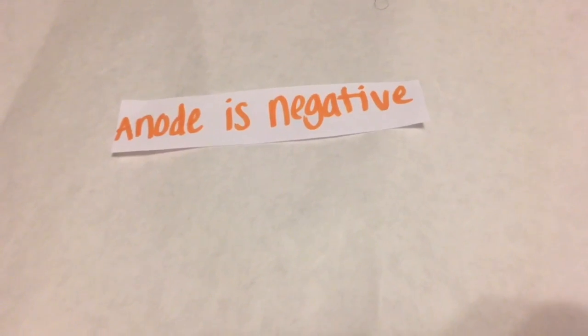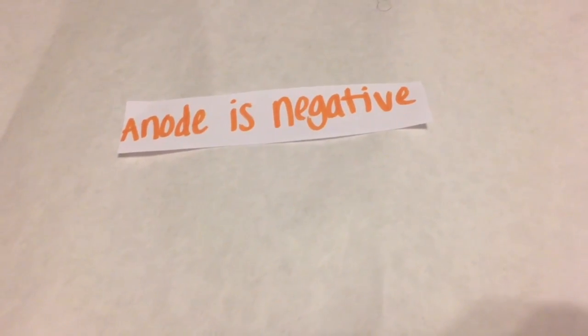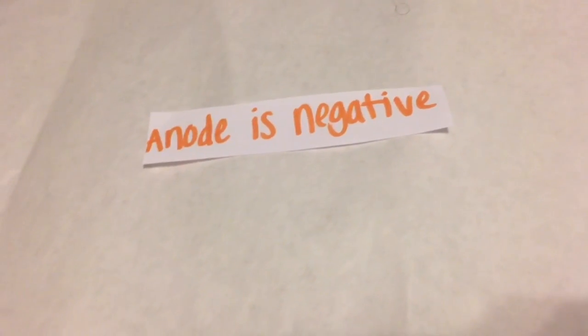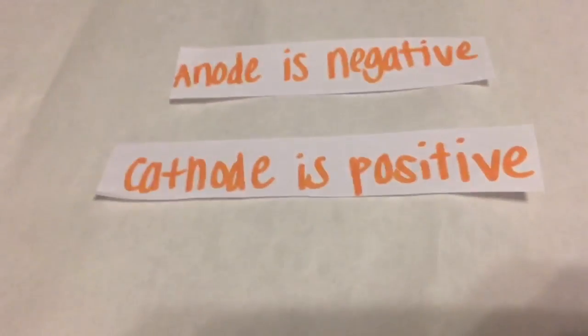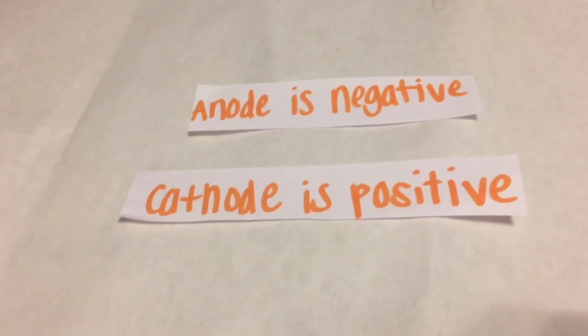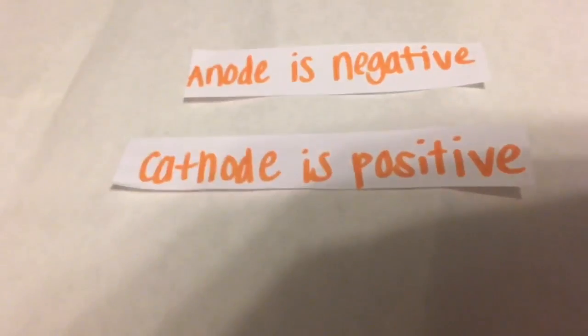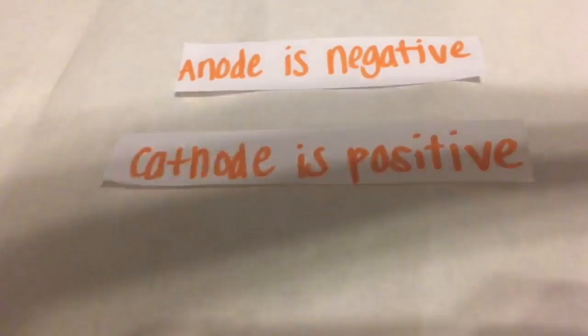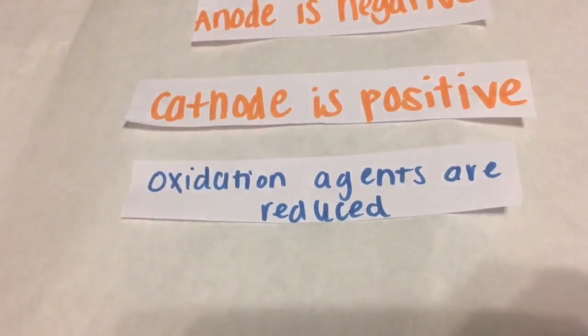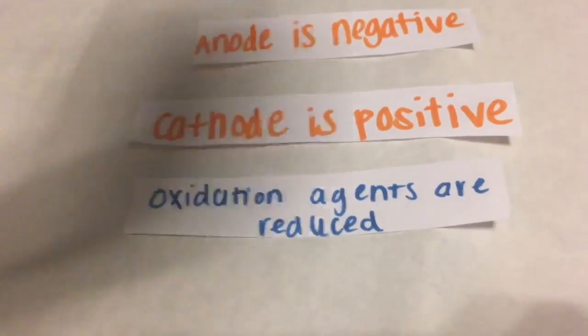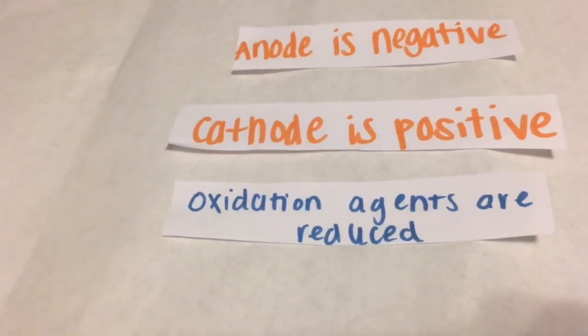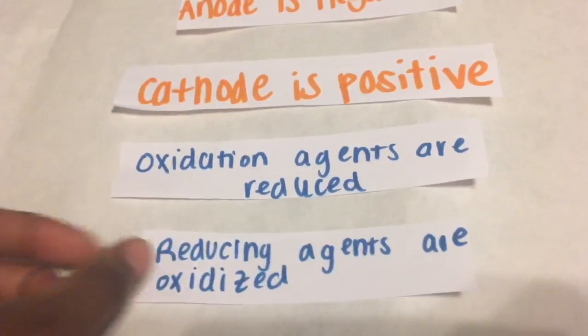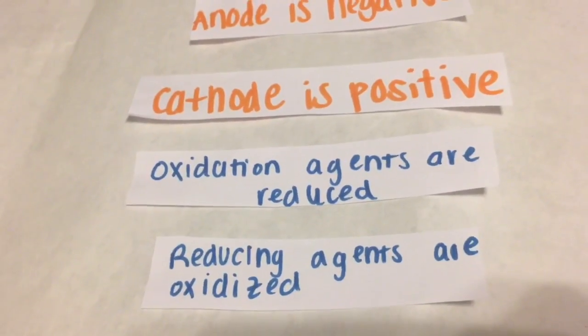The parts of the cell have different charges. The anode is negative. This receives most of the negative ions. The cathode is positive. It receives positive ions. Also, in the cathode, oxidizing agents are reduced. This may sound backwards, but the same idea works for the anode. In the anode, reducing agents are oxidized.